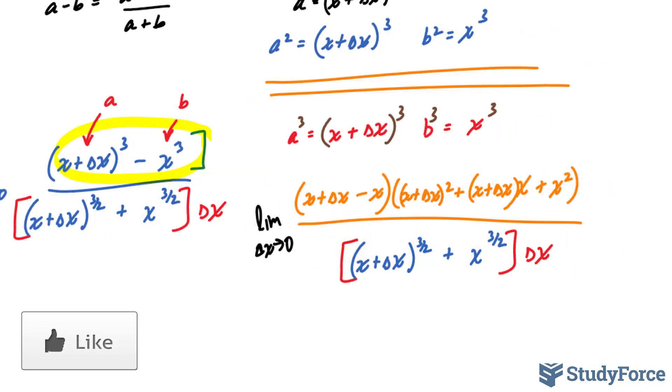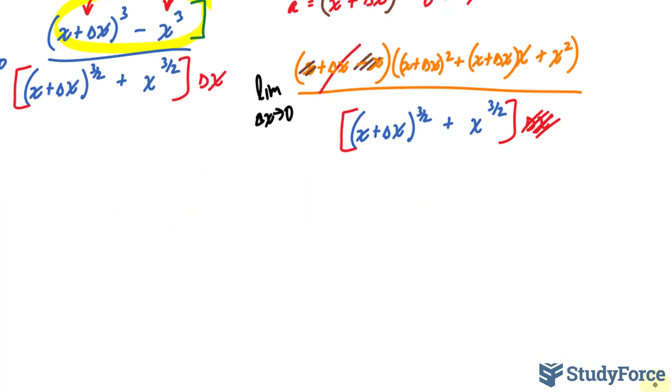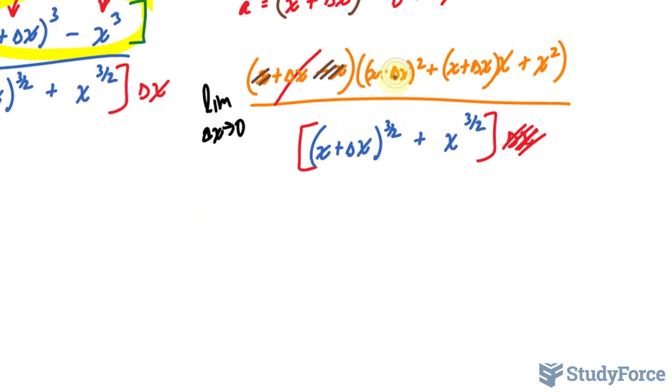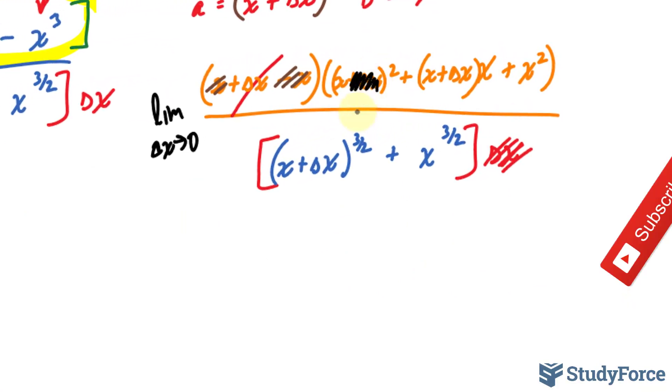Now we can start to simplify. We have minus x and this x, they cancel out and look what happens, something very special. This delta x is now on its own, it's a factor of its own which can be cancelled out with this one. This should really excite you because now you can apply the limit and not have to worry about this becoming zero.